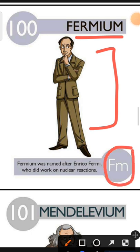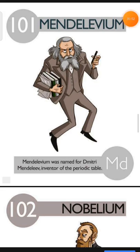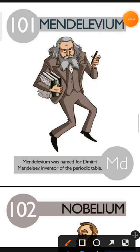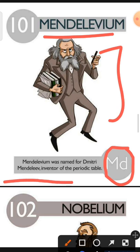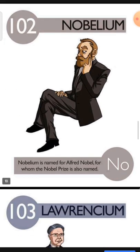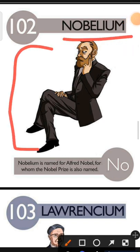Element number 101 is Mendelevium. The characteristic of Mendelevium is: Mendelevium was named for Dmitri Mendeleev, inventor of the periodic table. Element number 102 is Nobelium. The characteristic of Nobelium is: Nobelium is named for Alfred Nobel, for whom the Nobel Prize is also named.